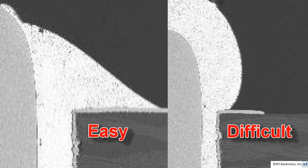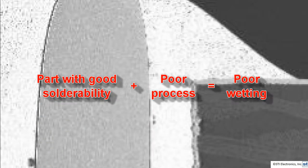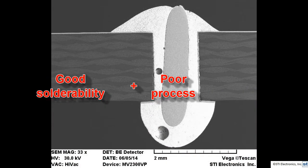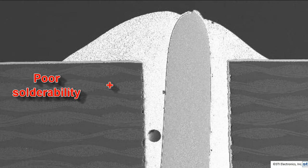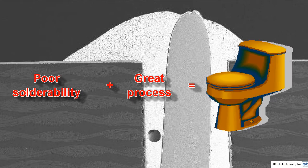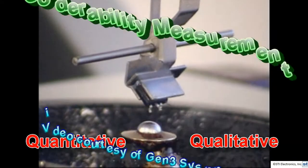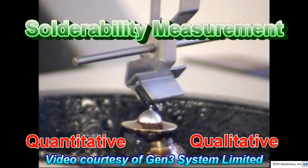We'll start by discussing solderability. The solderability of a material is a measure of how easy or difficult it is to form a solder connection to that material. You can have a part with good solderability and have poor wetting because of a poor process, so good solderability does not always lead to good wetting. If you have a part with poor solderability, it will be very difficult to achieve any acceptable wetting even if you have a great process. There are both quantitative and qualitative tests for solderability.